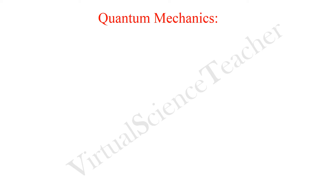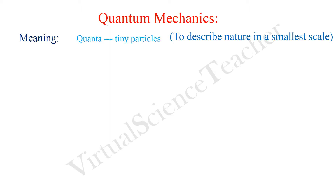The term 'quantum mechanics' comes from 'quantum,' which is the singular form of 'quanta.' The meaning of quantum is 'tiny particle.' From this term, we can understand that quantum mechanics is used to study the behavior of tiny particles. To describe nature at the smallest scale, we use quantum mechanics.